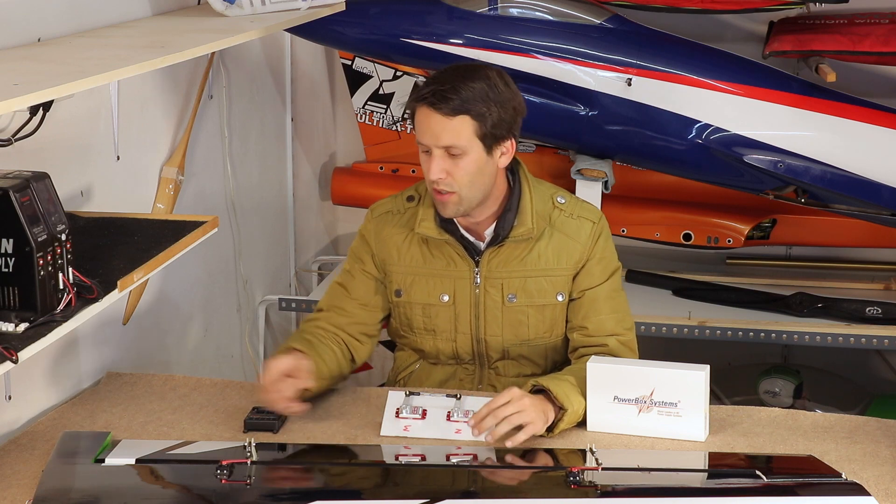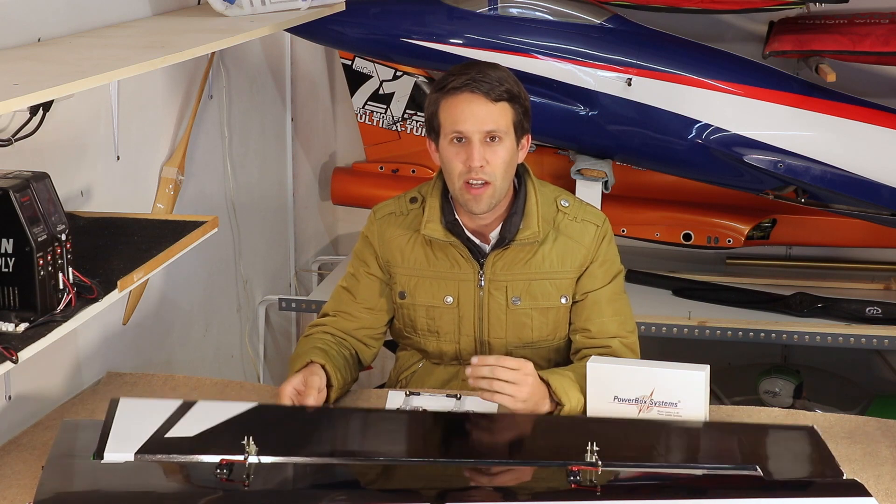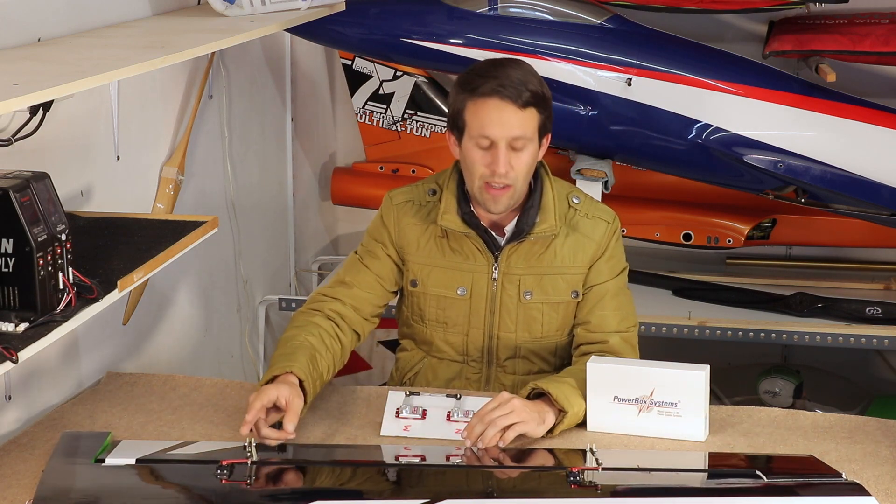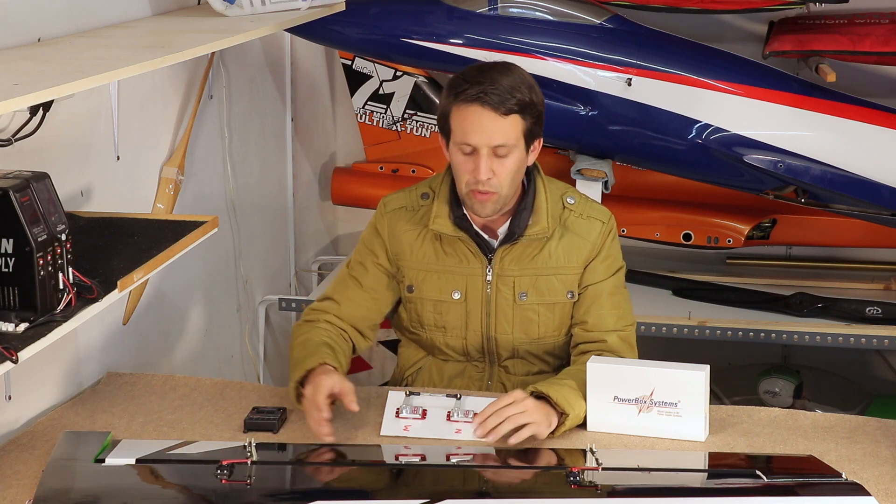Equally, the process will be the same for any other surface, such as the ailerons on my 100 cc extra, where I have two servos on the wing, albeit not directly linked to each other as we do for the Rudder, but both on the same surface and therefore needing to work in unison.